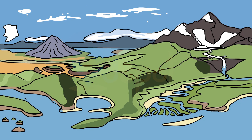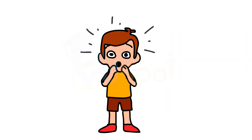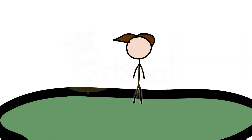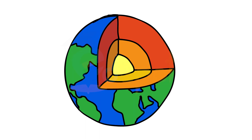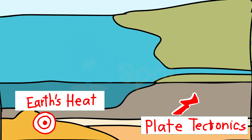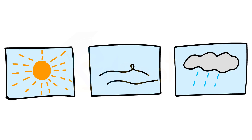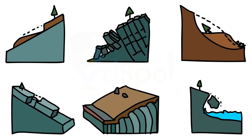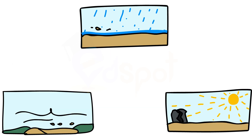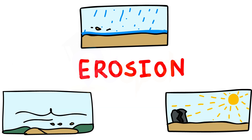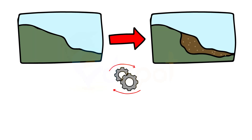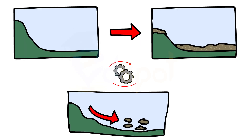These landforms are a result of two processes. You will be amazed to know that the ground you are standing on is slowly moving — within the earth, a continuous movement is taking place. The first or internal process leads to the upliftment and sinking of the earth's surface at several places. The second or external process is the continuous wearing down and rebuilding of the land surface. The wearing away of the earth's surface is called erosion. The surface is being lowered by the process of erosion and rebuilt by the process of deposition.